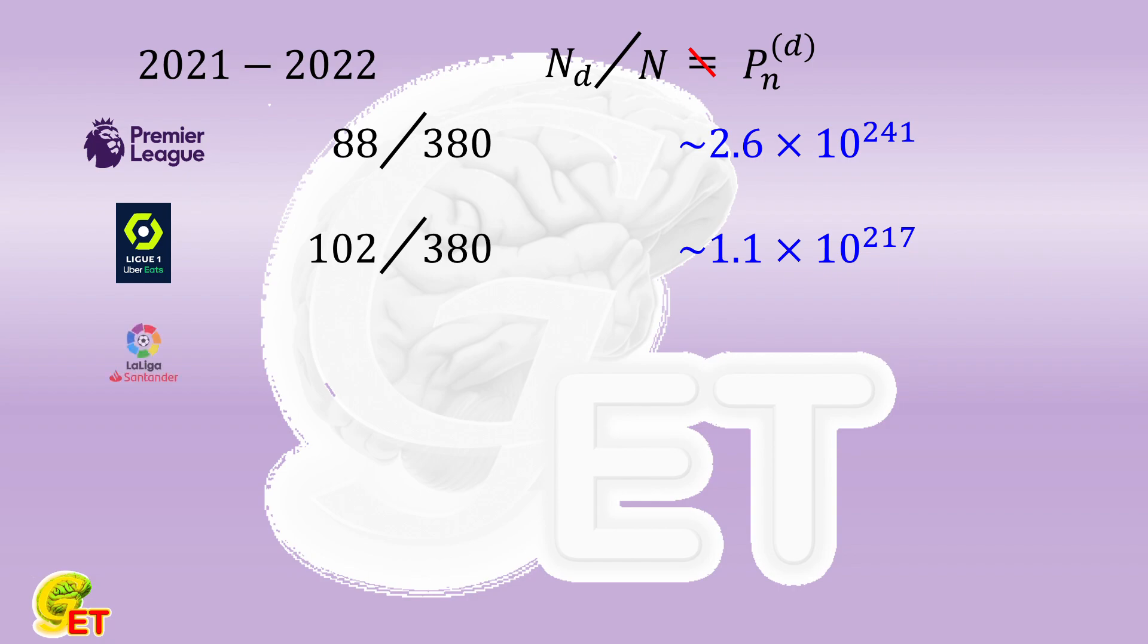The La Liga. Among the total 380 games, there are 111. So it will take more than 10 to the power of 203 seasons.